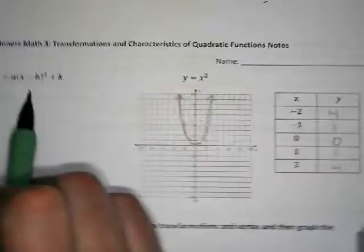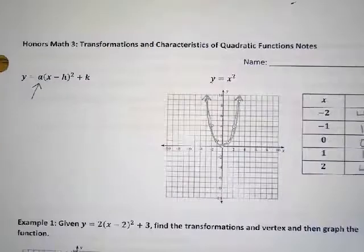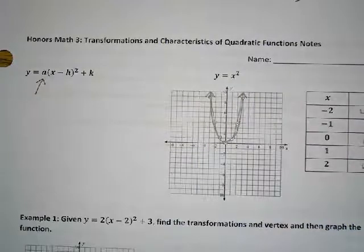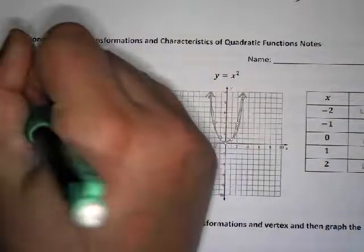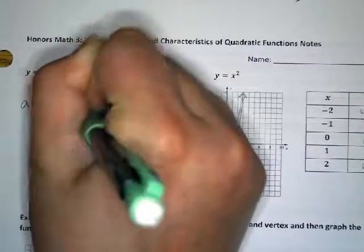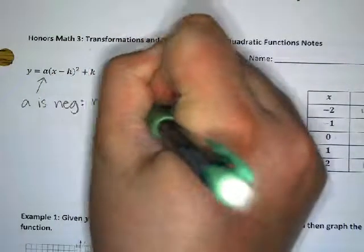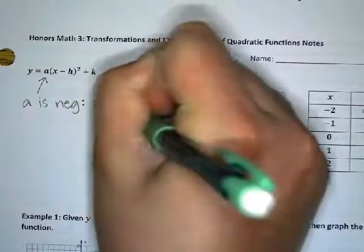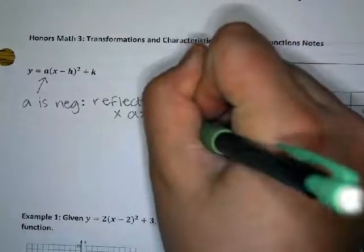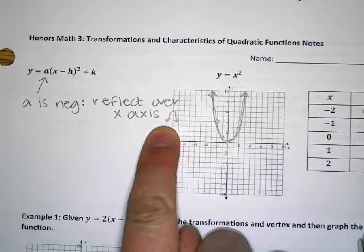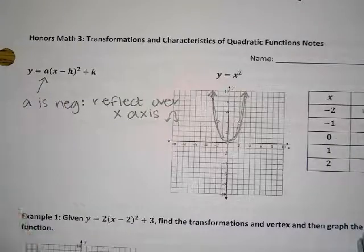This is what the equation can look like if you put other numbers in it. If you put a number in the front, it can make the graph tall and skinny, short and fat, or flip it upside down. If the number in the front — the 'a' value — is negative, it takes the graph and reflects it over the x-axis, making the U-shape upside down. Anytime you see a negative in the front, it makes the graph look upside down.